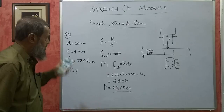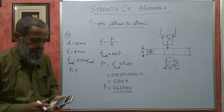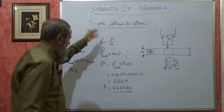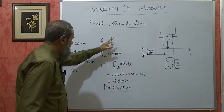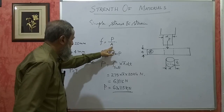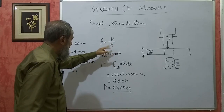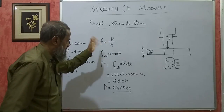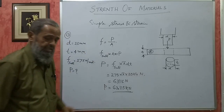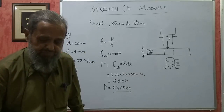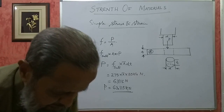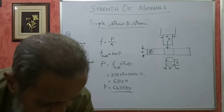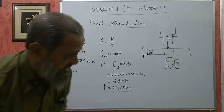This is how it should be done. In the earlier problem, P and stress were given and we found out A. Here, A and stress are given and we are asked to find the value of P. Like this, we get simple problems on this chapter which have to be solved.